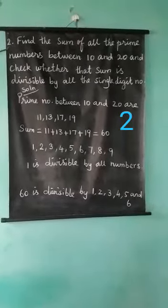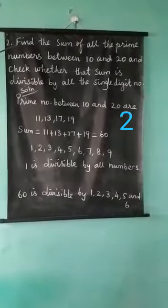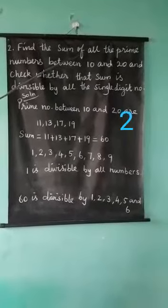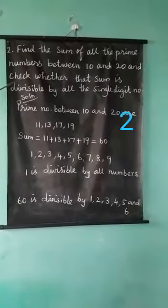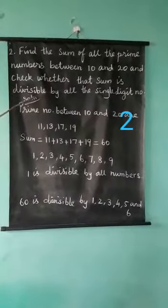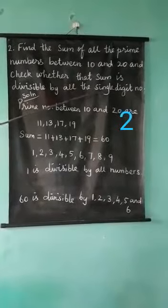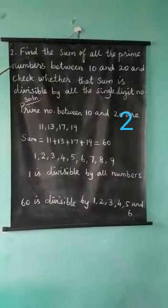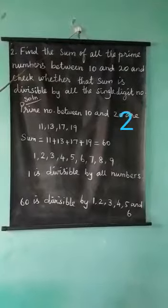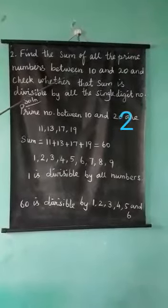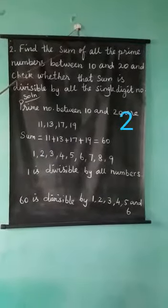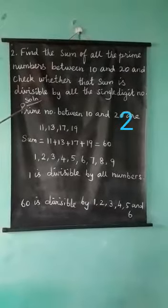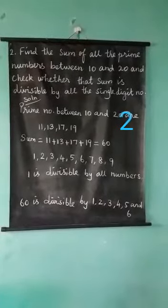Dear students, see the second sum. Find the sum of all the prime numbers between 10 and 20. Check whether that sum is divisible by all the single digit numbers.